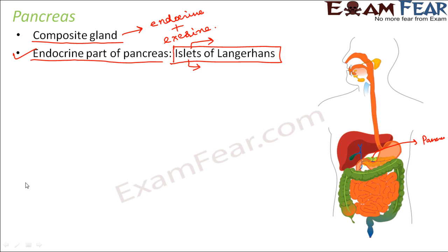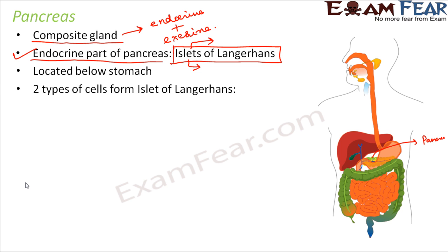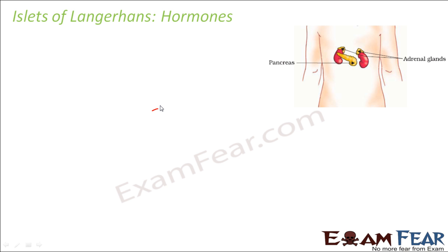There are almost one to two million cells which exist inside the pancreas, which is located below the stomach. The islet of Langerhans is made up of two types of cells: alpha cells and beta cells. These alpha and beta cells secrete different hormones. Now we are going to talk about the various hormones released by the alpha and beta cells of the islet of Langerhans.